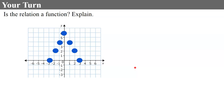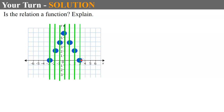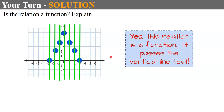Now another one for you. Go ahead and determine if this relation is a function. Pause and come back and hit play when you're ready. Welcome back. I'm going to use the vertical line test because it's a graph. My first vertical line passes through one point on the graph, one point, one point, and we can keep going. Every vertical line I draw passes through one point, and there is no line that passes through two. So yes, this relation is a function — it passes the vertical line test.